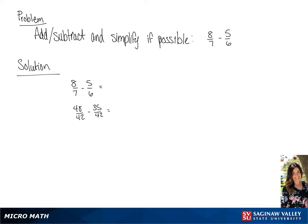This gives us 48 over 42 minus 35 over 42, and we get 13 over 42 for our final answer.